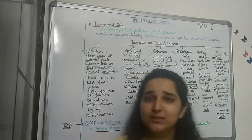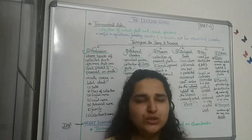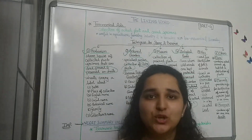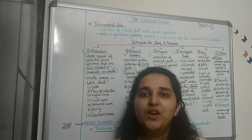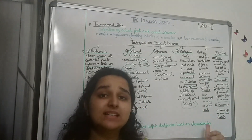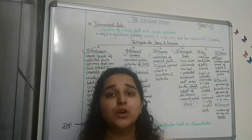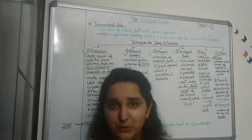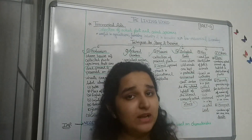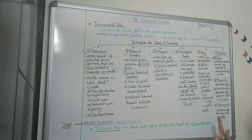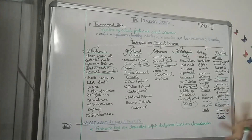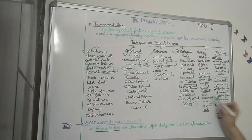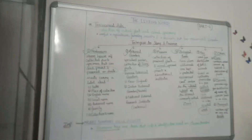Every statement in the key is known as a lead — just like in crime shows where the police 'get a lead' and move closer to the criminal, each lead in the key moves you closer to identifying the plant or animal specimen. The pair of contrasting characters is known as a couplet, and each statement in a key is known as a lead.